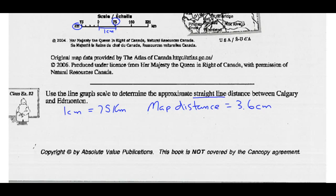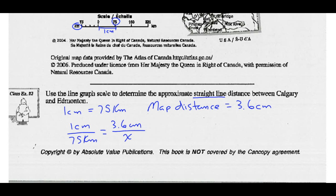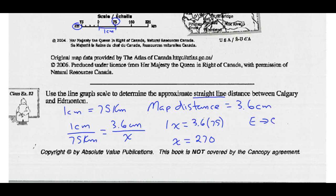With our line graph scale of 1 centimeter over 75 kilometers, and the map distance measured as 3.6 centimeters, we can figure out the actual distance using proportional reasoning. Cross-multiplying: 1 times x equals 3.6 times 75, so x equals approximately 270 kilometers. The straight-line distance from Edmonton to Calgary is about 270 kilometers.